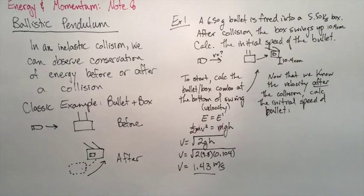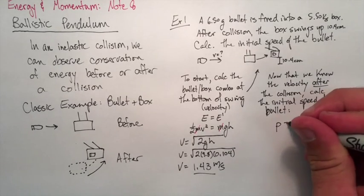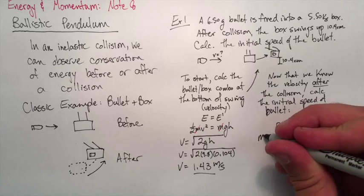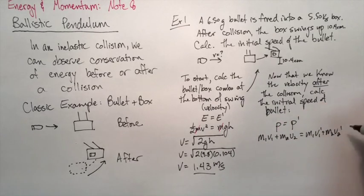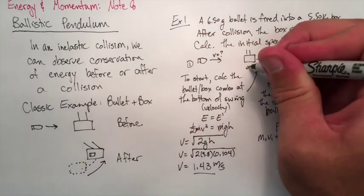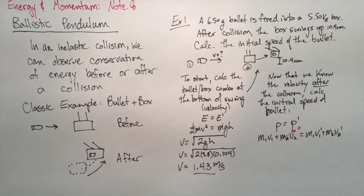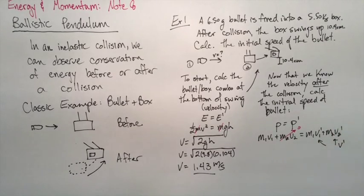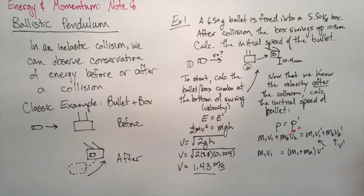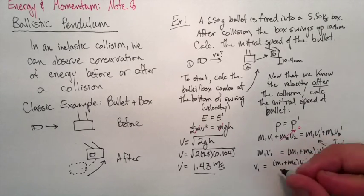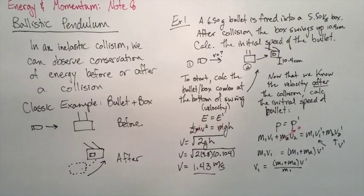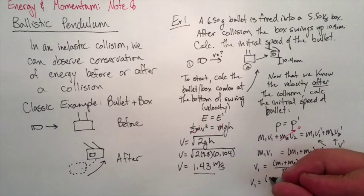We know that momentum initially equals momentum finally. The bullet is flying into the box. We have momentum for the bullet, which is 1, the box, which is 2. The box is just hanging there to begin with, so it's going to be zero velocity at rest. When they're embedded together, they're going to be the same object, so the velocities will be the same. We'll call it V' and we'll factor that out. V' is what we calculated before, 1.43 meters per second. Let's solve for the initial velocity of the bullet.